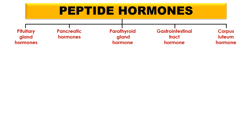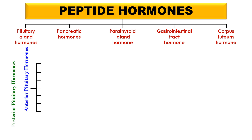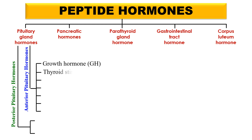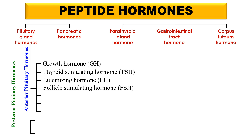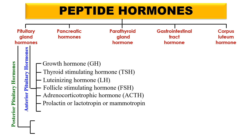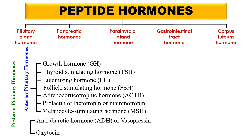In case of the pituitary, we have two lobes of the pituitary gland — anterior and posterior. Anterior pituitary hormones include growth hormone, thyroid stimulating hormone (TSH), luteinizing hormone, follicle stimulating hormone, adrenocorticotrophic hormone (ACTH), and prolactin which is also known as lactotropin or mammotropin. Then melanocyte stimulating hormone. Posterior pituitary hormones include antidiuretic hormone or vasopressin, and oxytocin.